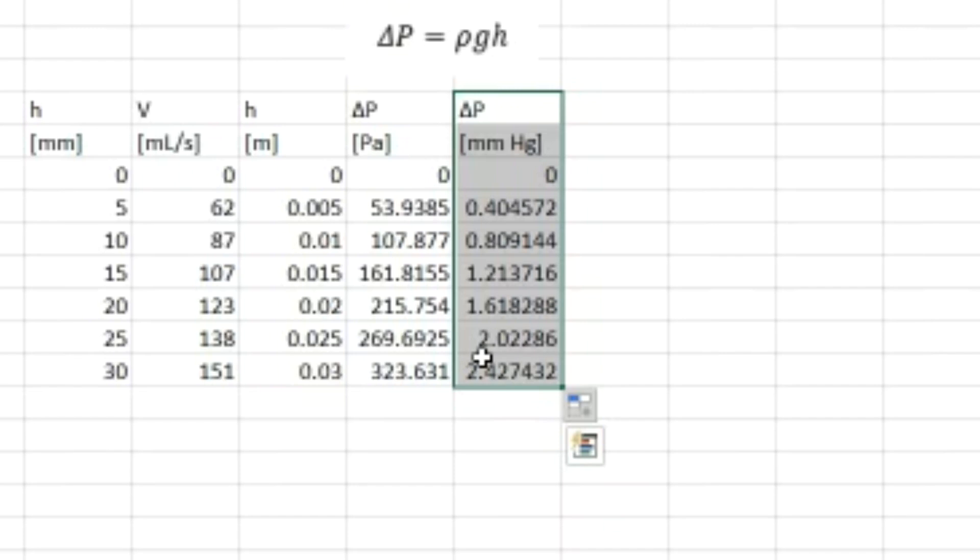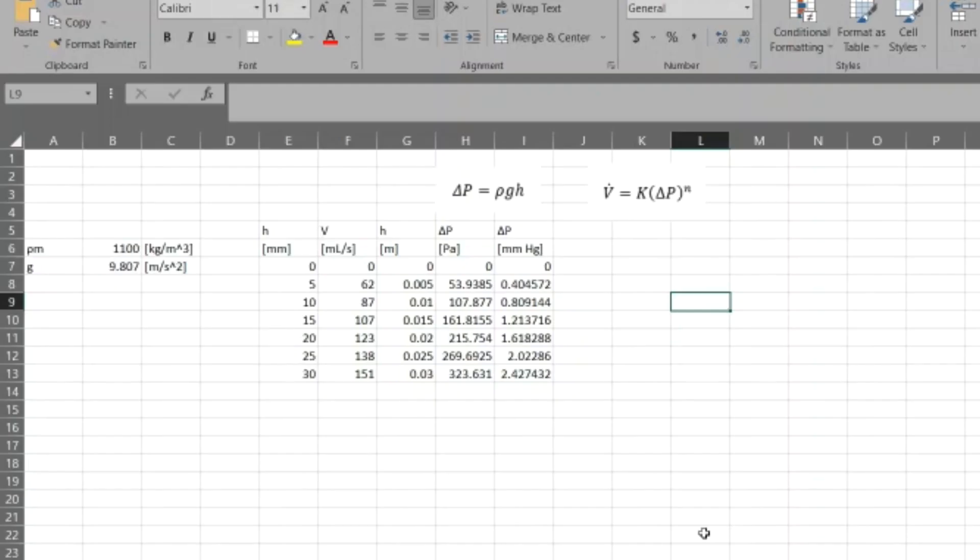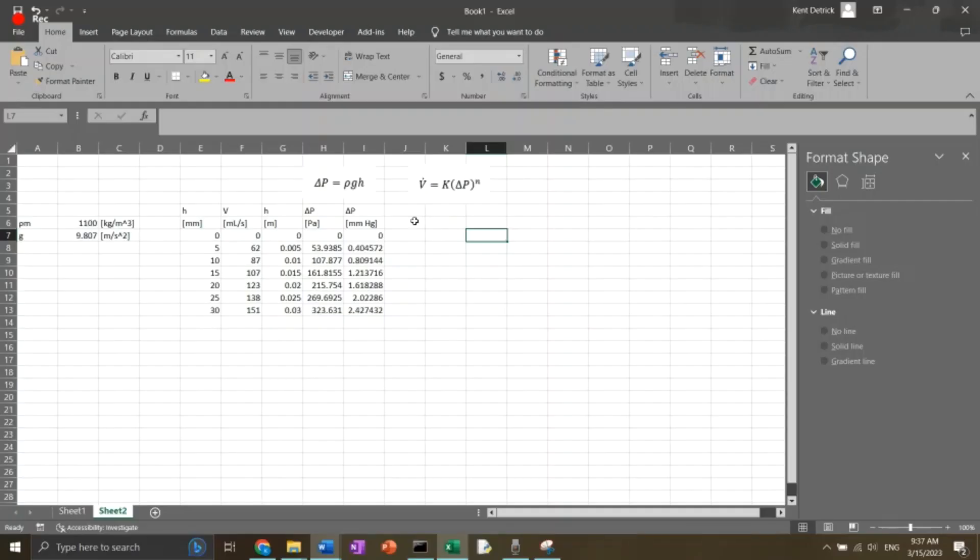So for part B it says the flow rate through an orifice should be related to the pressure drop across the orifice by the formula V equals K times delta P to the N. Verify graphically that the given orifice calibration data are correlated by this relationship and determine the values of K and N that best fit the data. Well, we want to turn this into what we've done before in this book, we've turned all of these problems into a linear model first. In this one we have two parameters and it's an exponent relationship here. So we can just take a log log plot of this data and that should give us a straight line.